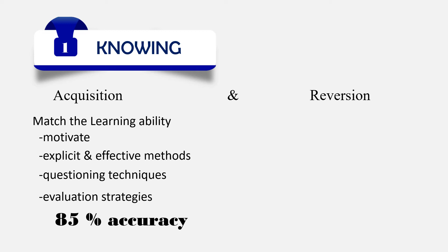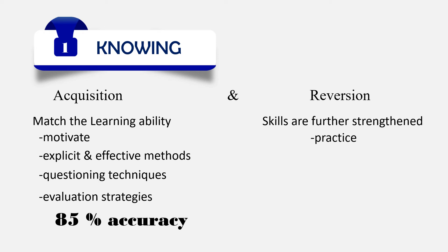In reversion, the content and skills learned earlier are further strengthened to increase accuracy and mastery. Correct practice, drill, review and similar strategies are used with immediate feedback and reinforcement. Through continuous efficient and effective instruction, relevant practice, coaching and feedback, the student is gradually helped to perform the skills with at least 85% accuracy during the knowing stage of learning.